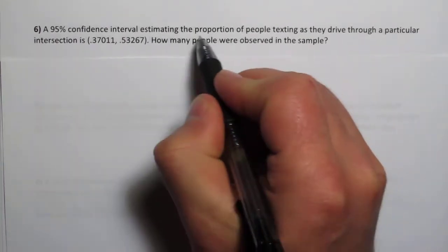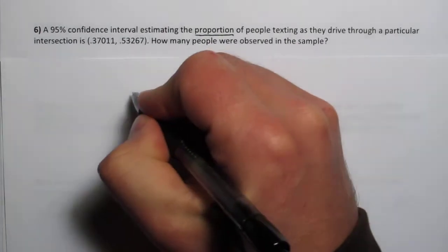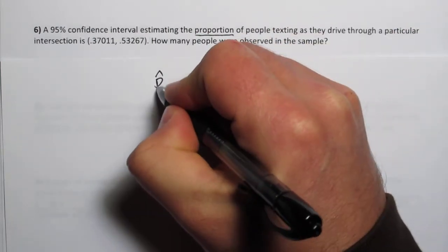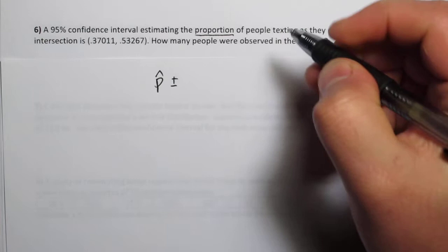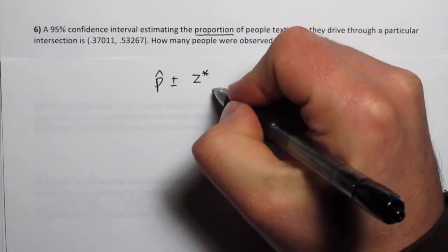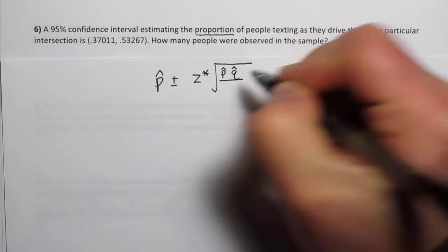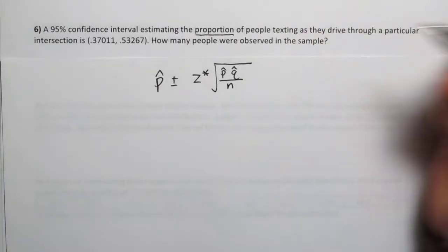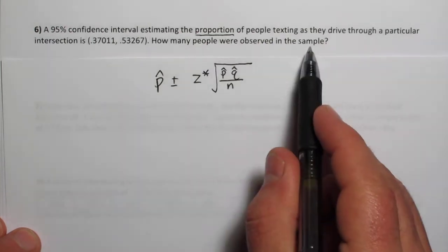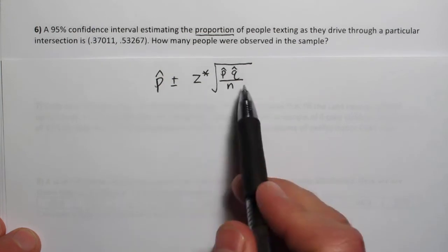So one thing we know, this is a confidence interval for proportion, so it must have been constructed like this. They found p-hat, some sample proportion, and then they added and subtracted a margin of error, which for proportion problems is z-star times the square root of p-hat q-hat over n. So there's n, that's what we're trying to figure out, how many people were observed in the sample, the sample size.